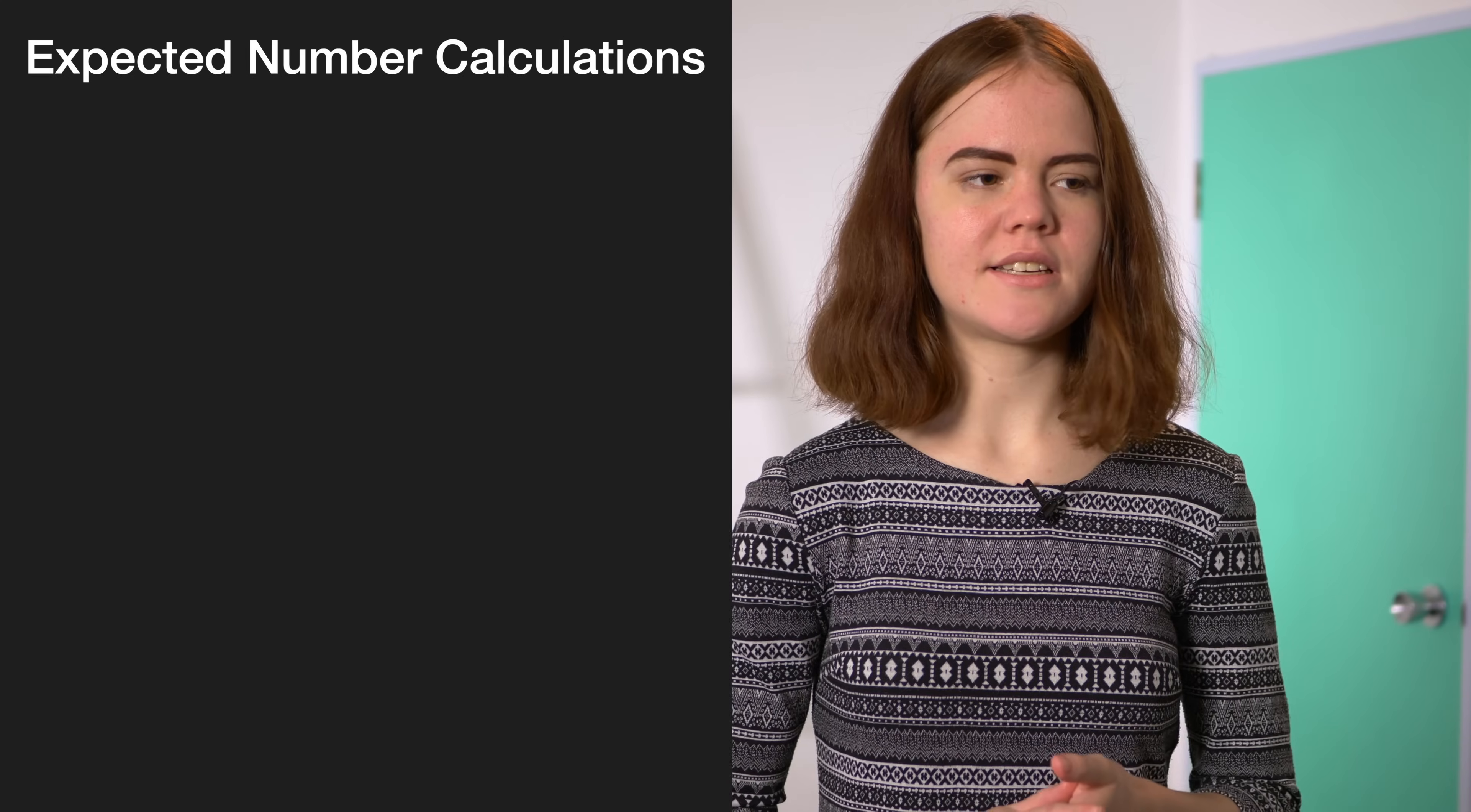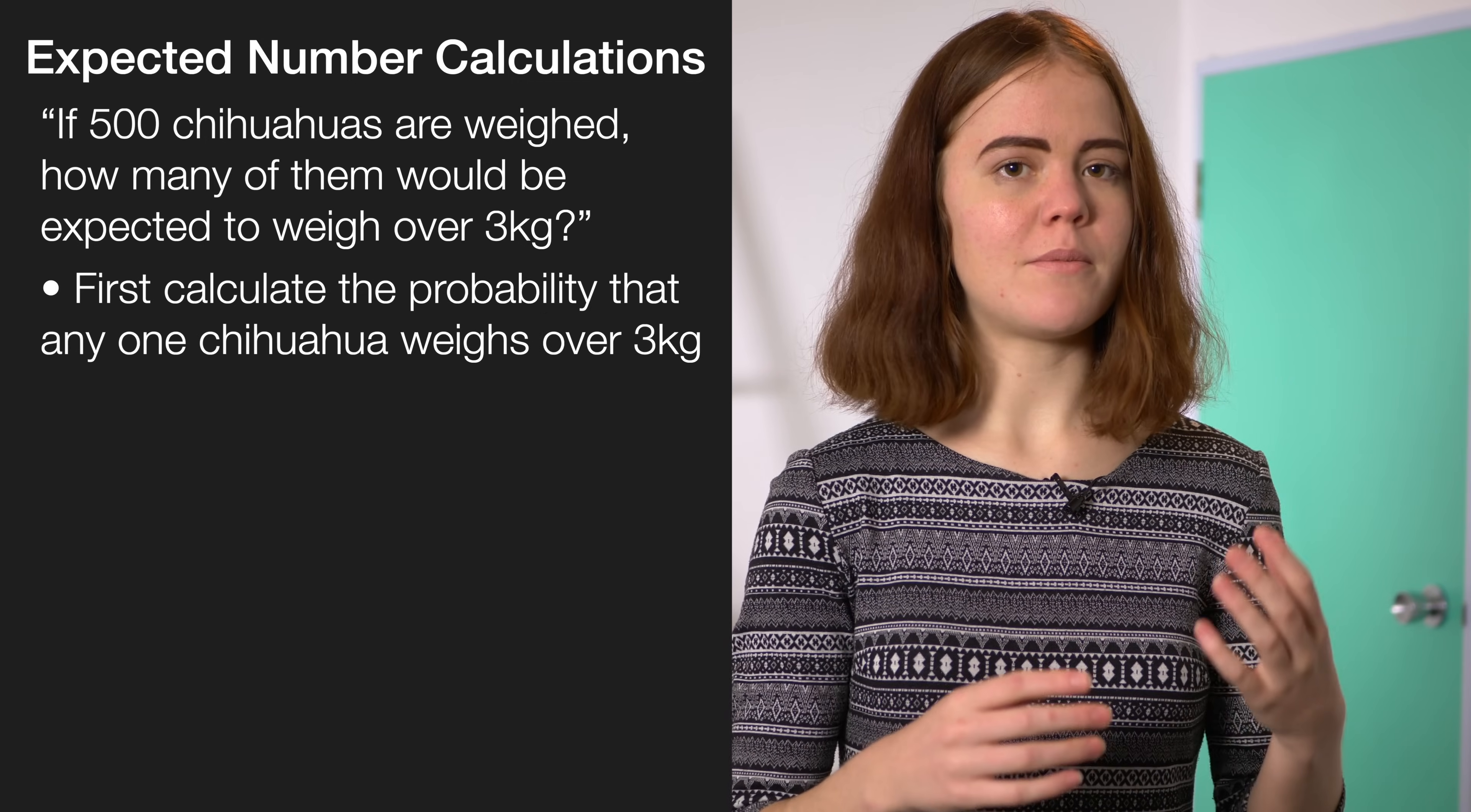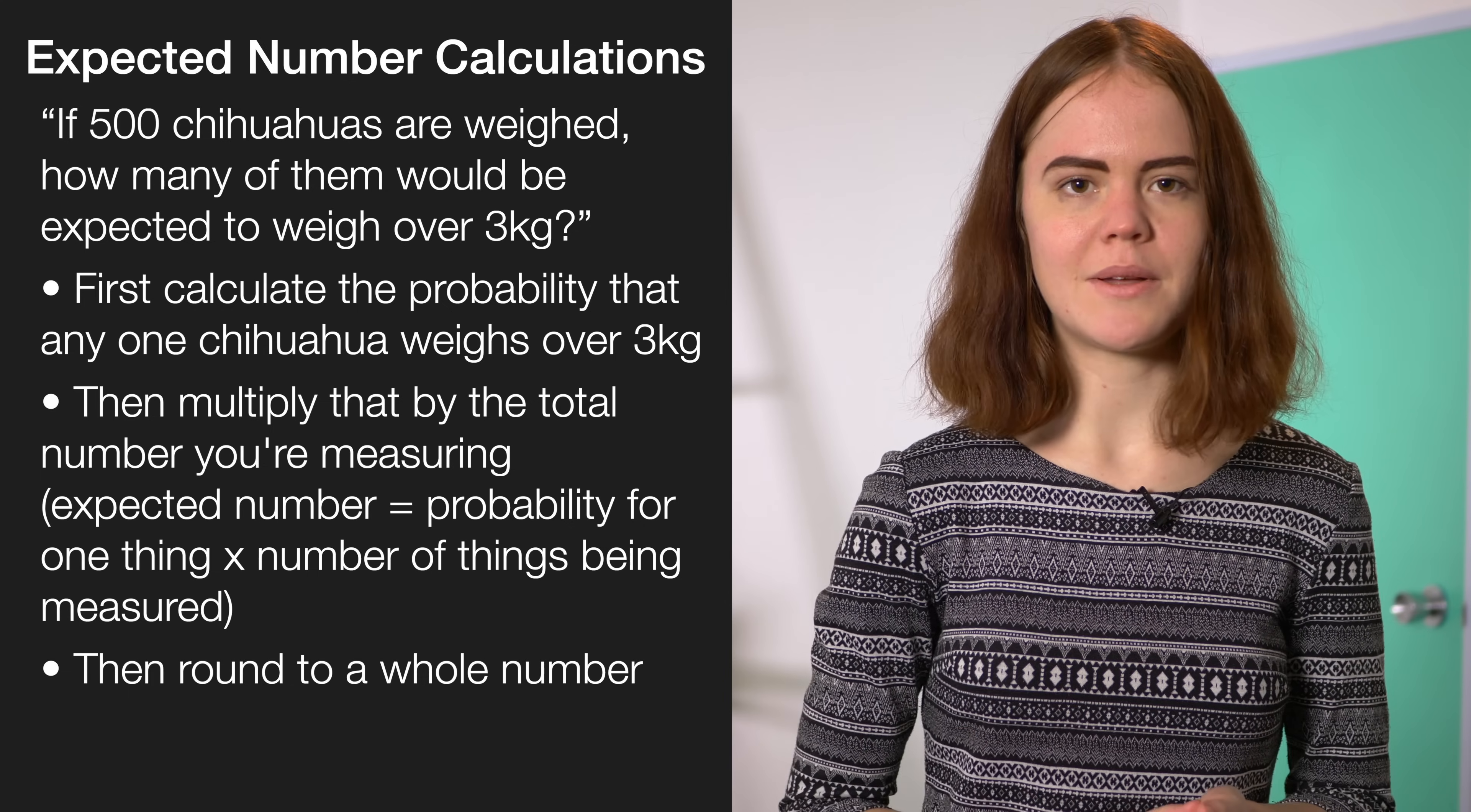There are some skills that can come up in any kind of question, whether it's a tree, the normal distribution, or a two-way table. A good example of this is expected number calculations. So, for example, in a normal distribution question, the question might say, if 500 chihuahuas are weighed, how many of them would be expected to weigh over 3 kgs? The steps you take with this are, first, you calculate the probability that one chihuahua weighs over 3 kgs, then you just multiply it by the total number you're measuring. So, you multiply that probability by 500. Then, at the end, you'll round that to a whole number, because you can't have half a chihuahua.